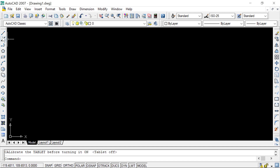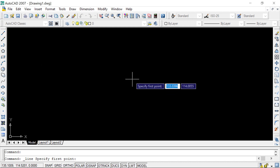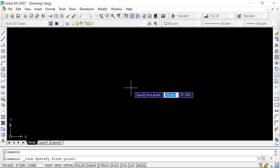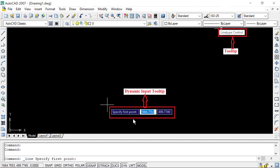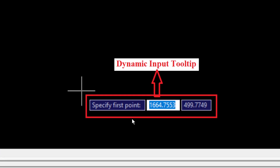When you activate any command or tool in AutoCAD, you will see a blue box with crosshair called the Dynamic Input Tooltip. This Dynamic Input Tooltip shows the activated command and what you need to set next — all current status information is dynamically displayed in this input tooltip.